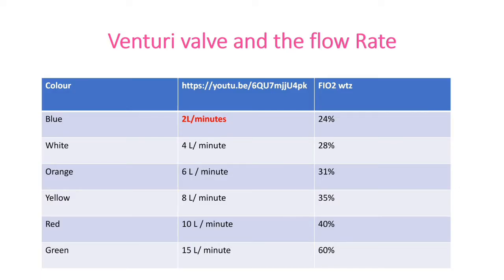Regarding the venturi valve colors and flow rates: blue color delivers 2 liters per minute providing 24% FiO2; white color delivers 4 liters per minute providing 28% FiO2.